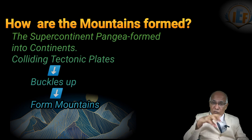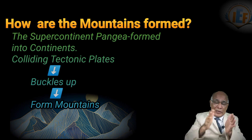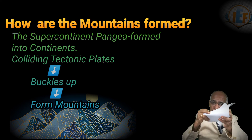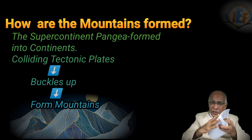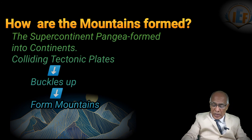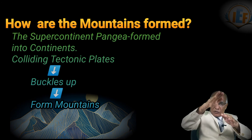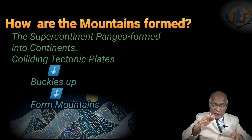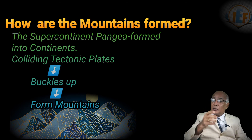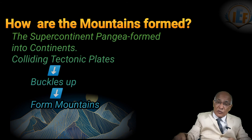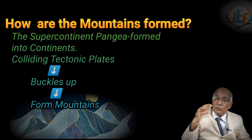Generally, these formations occur in four ways. One is folding — when the two plates are colliding each other, there is a folding. Sometimes you find faulting — when they drift, the middle part will completely slide down; that is faulting. And it also causes volcanic activity. Then there is igneous formation, and metamorphism. In these different ways, mountains are formed.